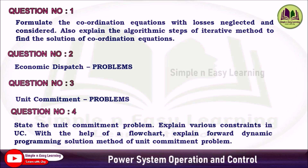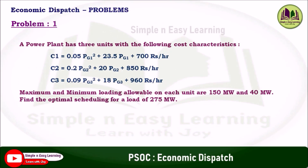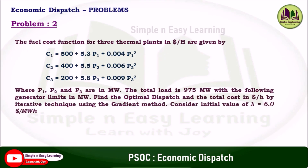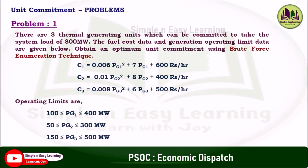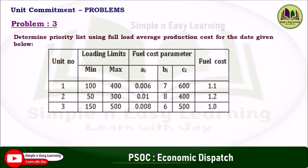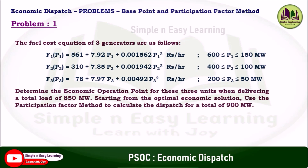Example problems in Unit 4: For economic dispatch, a three-unit system optimal scheduling problem is important, along with a gradient method problem. For unit commitment, brute force enumeration technique and priority list using full load average production cost are important. Also concentrate on the base point and participation factor method problem in economic dispatch.